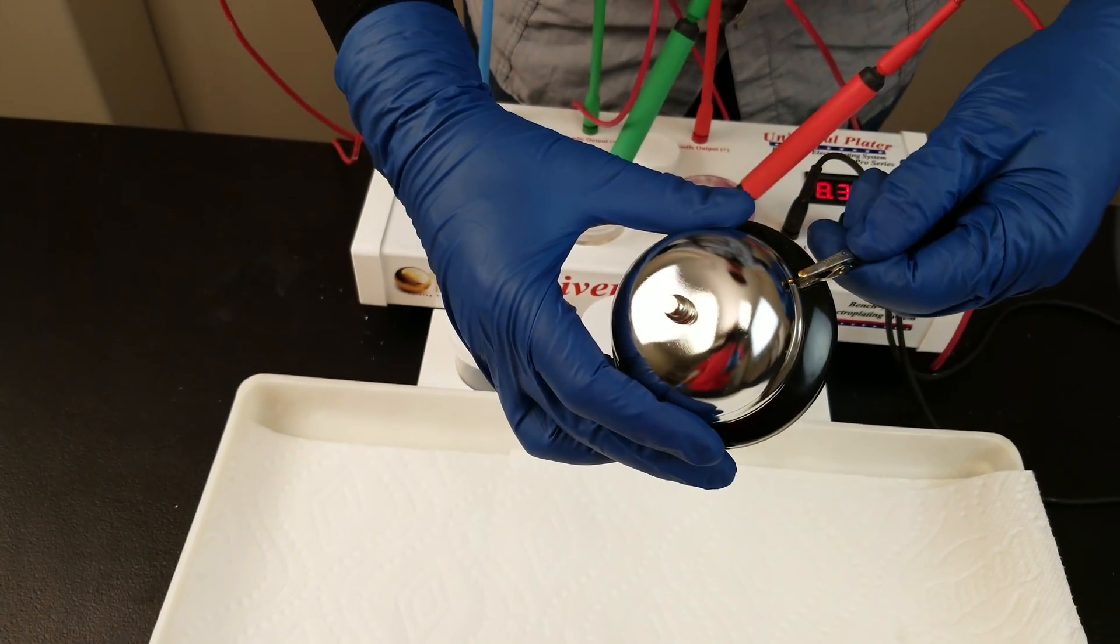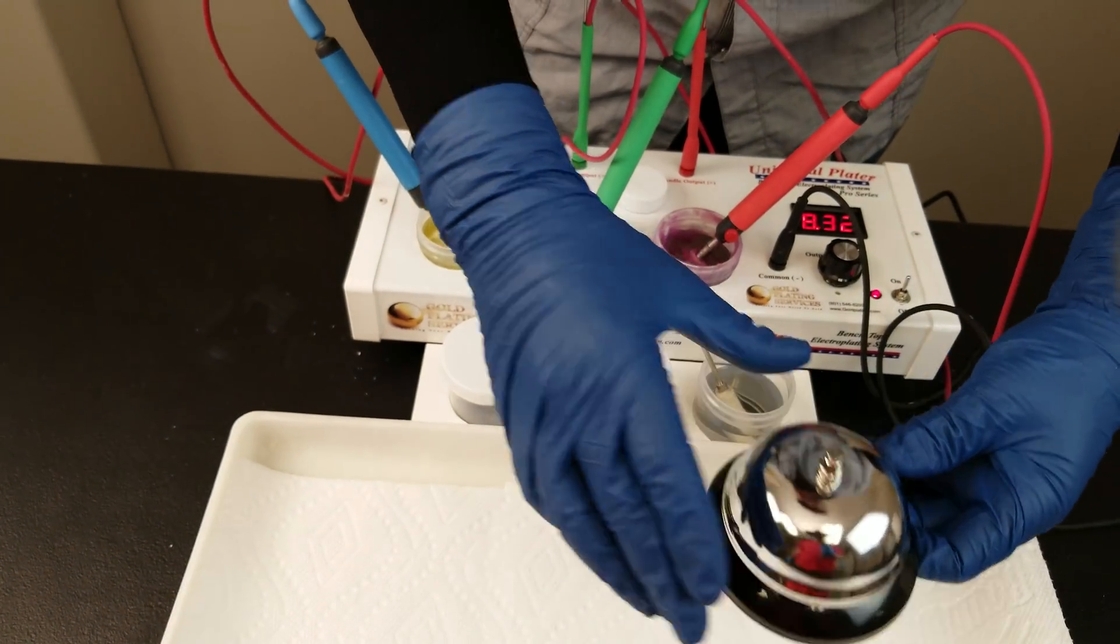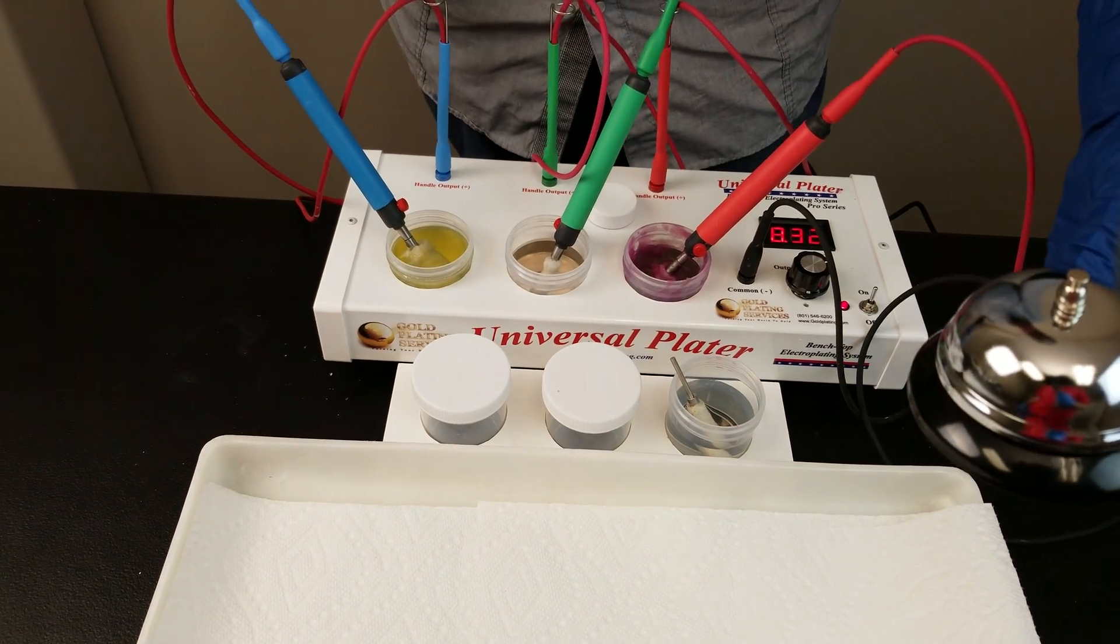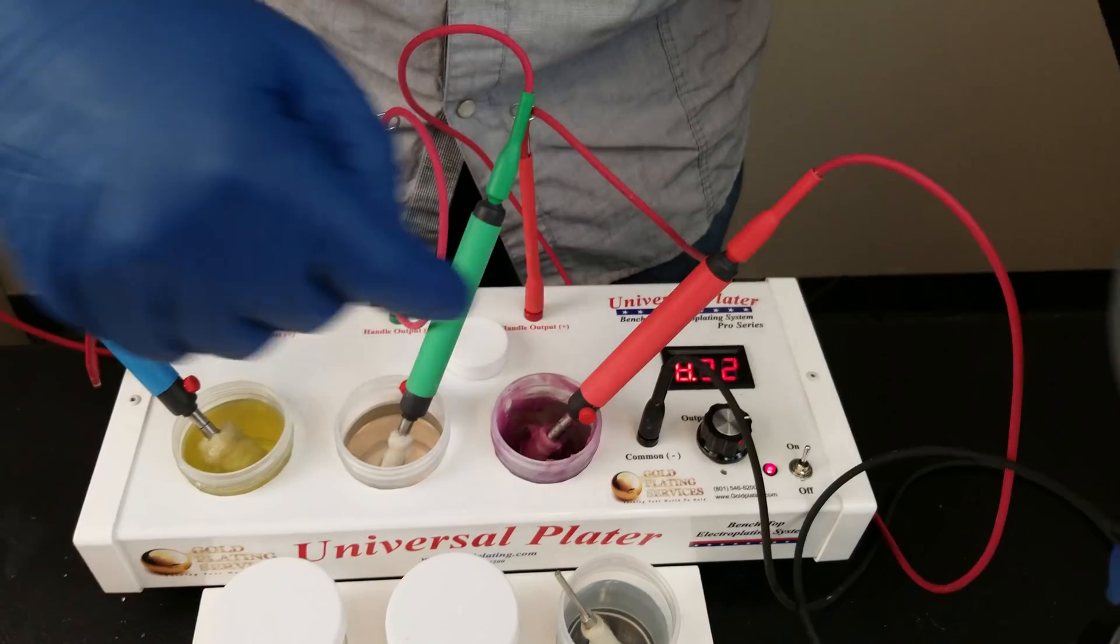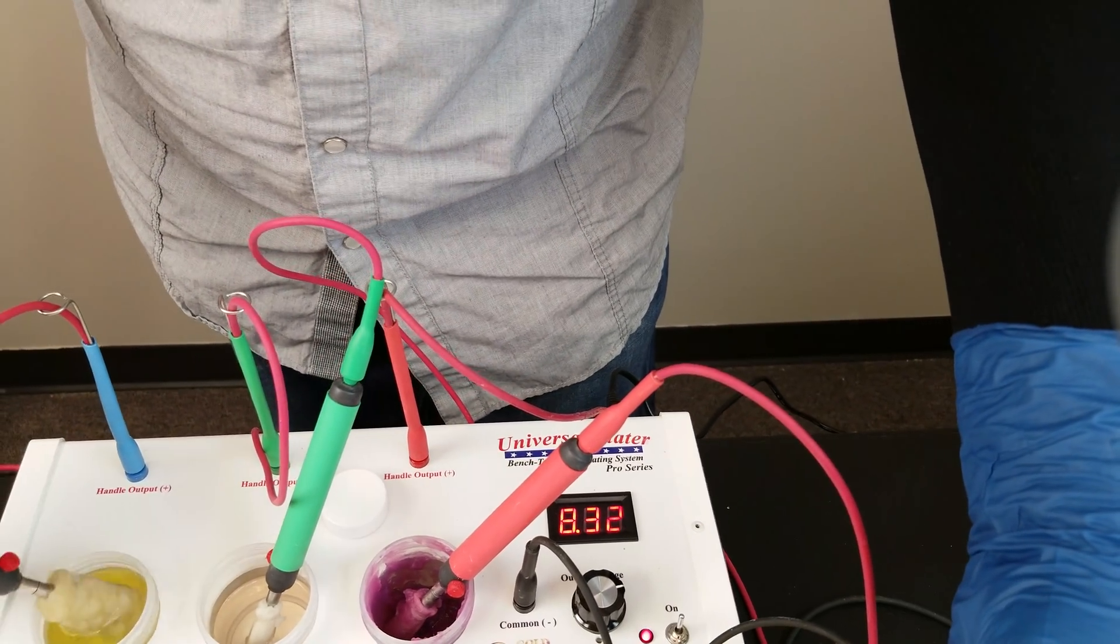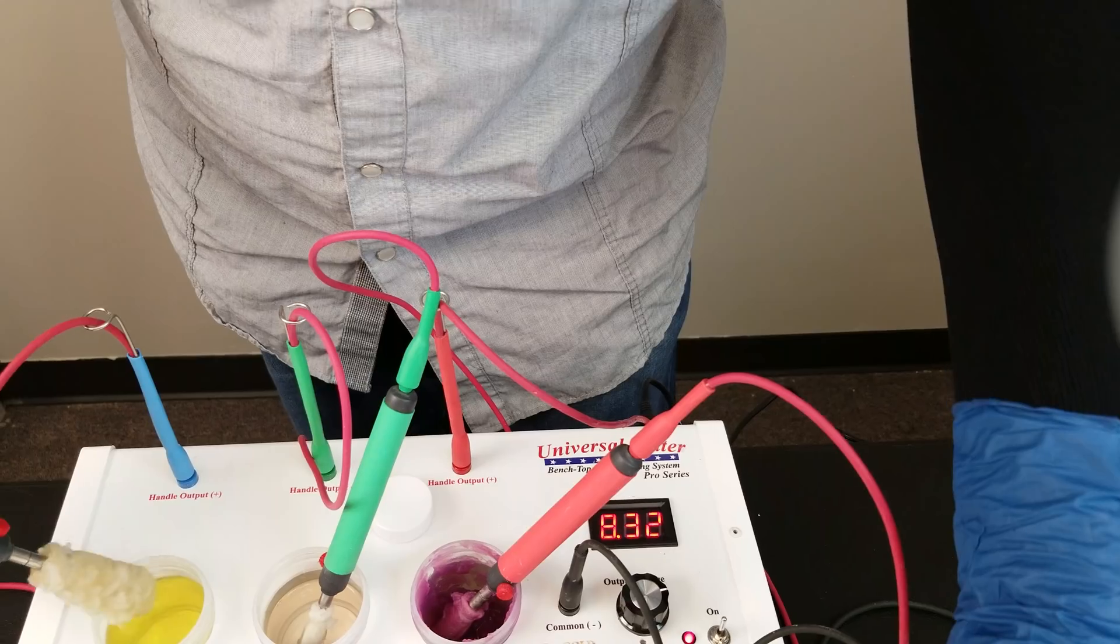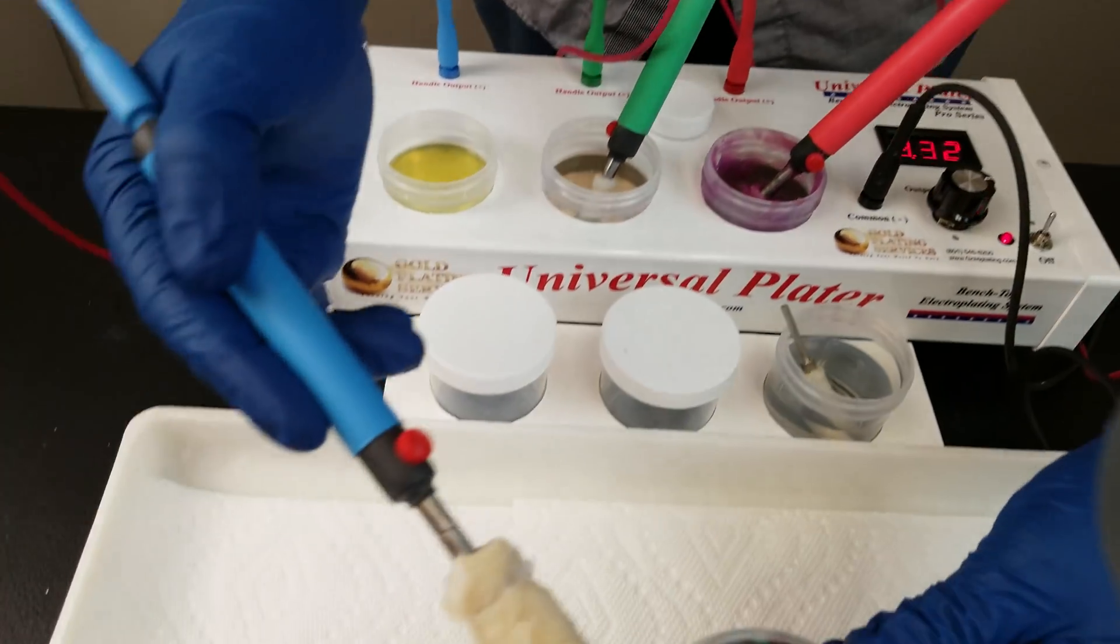First we've got to find a spot to clip. I'll get it right here. This is the regular universal plater. We've got the voltage set to 8.3 before. It'll drop down to around 7 while plating, which is what we're looking for.